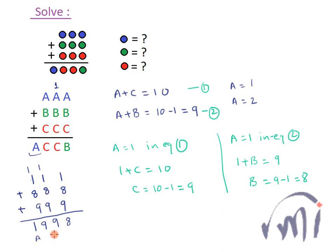So yes this is A, this is C, this is C, this is C and this is B. So this will be the solution to this problem. So from here we can say the blue dot or A is equal to 1 and green dot or B is equal to 8 and red dot or C is equal to 9.